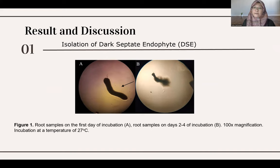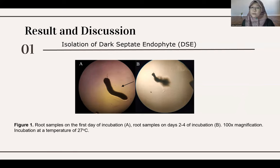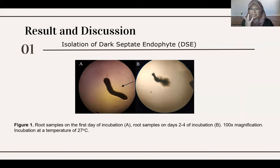Dark Septa Endophyte lives in symbiosis with its host plant. They live in the intracellular and extracellular parts of plant leaves and roots. This microbe helps the plant to absorb nutrients more efficiently. Plants can grow better and have more efficient nutrient absorption with DSE inside their tissues. Various DSE can be collected from the surface of the host plant.